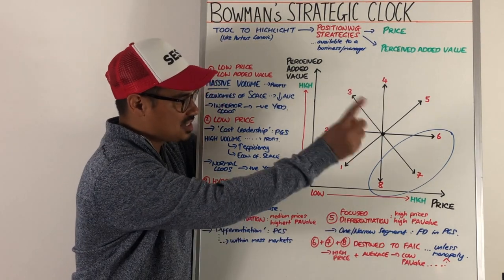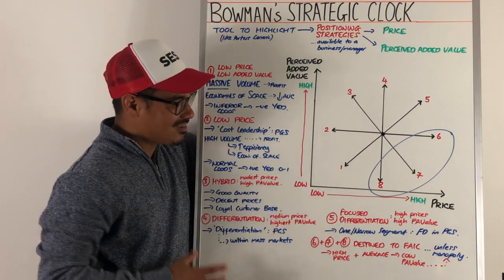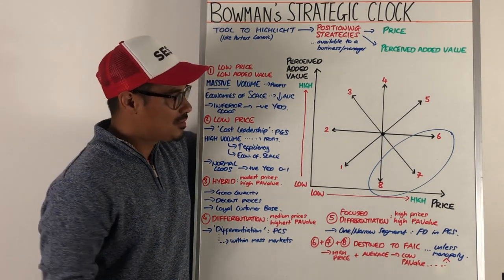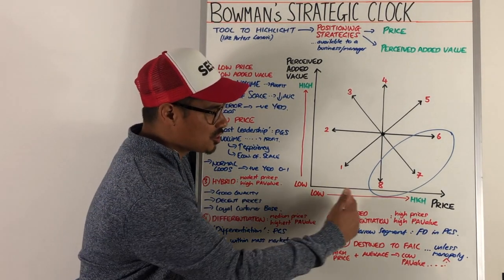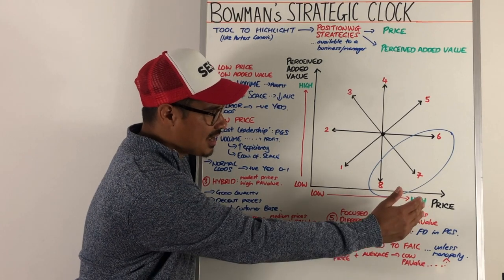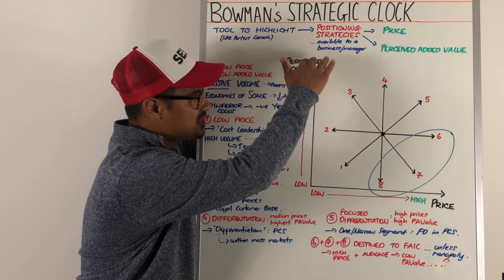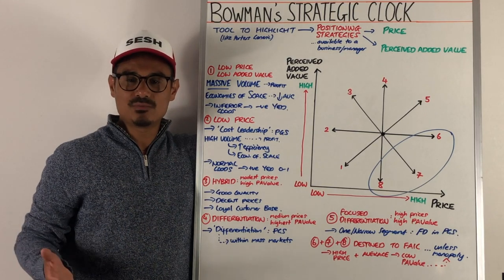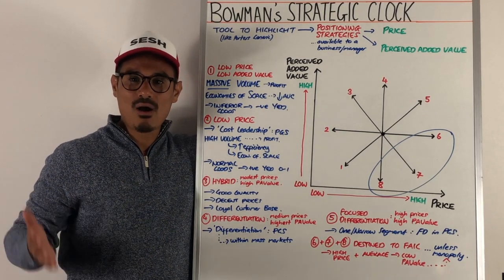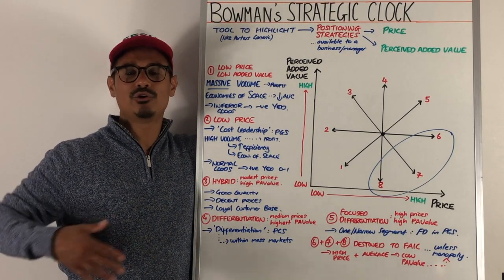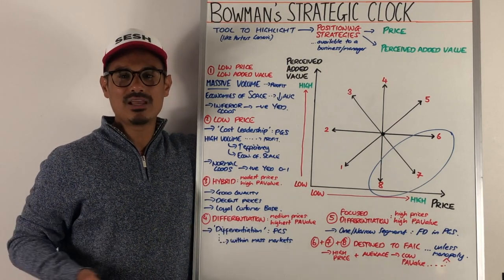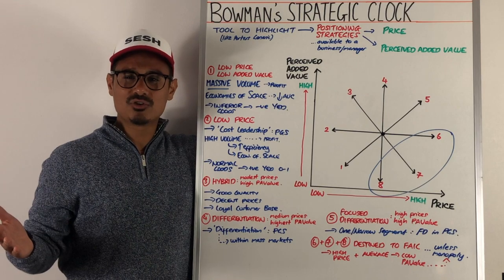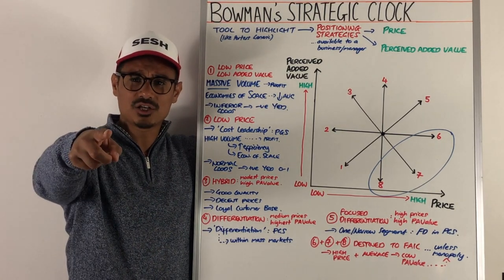The last positions — six, seven, and eight — are seen as undesirable and really destined-to-fail strategies. When you think about them, you're essentially charging a high price while the perceived added value is pretty low, so it doesn't make sense to be in those positions. However, if you are a monopoly and the only seller in the market, you may well be able to get away with that position. I hope that helps on Bowman's Strategic Clock, and I'll see you in the next session.